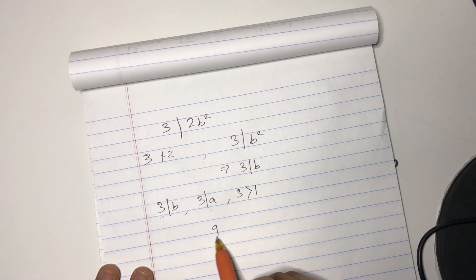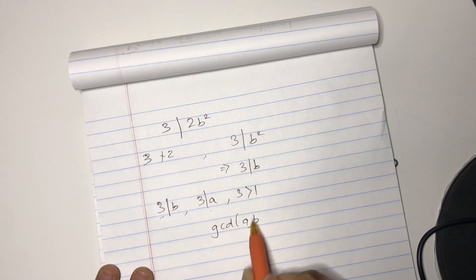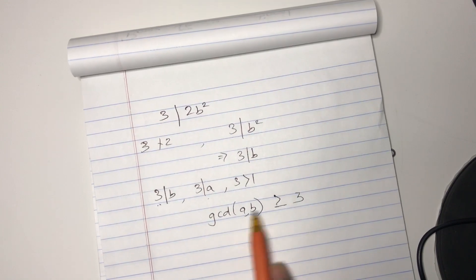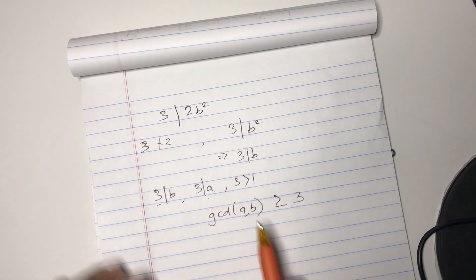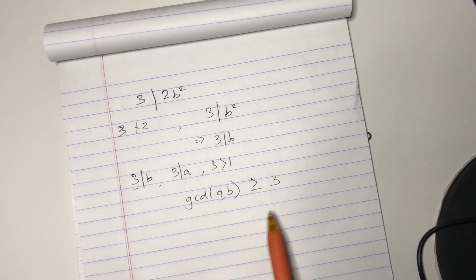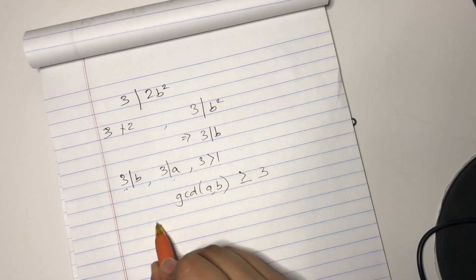And we had 3 is greater than 1. But in the previous page, if you remember, I said the GCD of A and B equals 1 from the previous page.